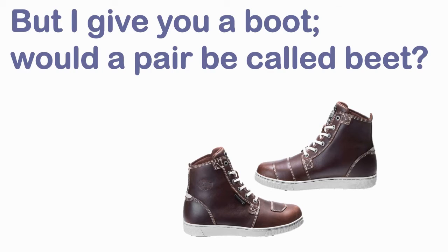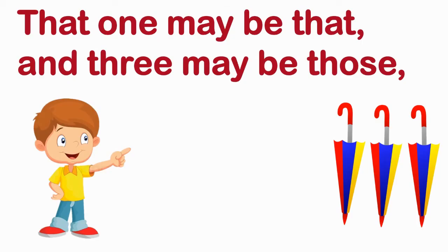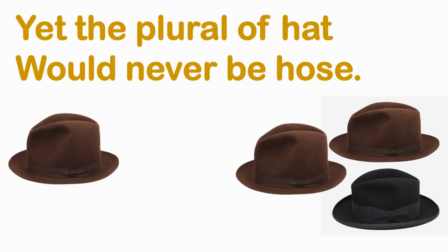That one may be that and three may be those. When you point out something, we say 'that' — for example, 'that is a book,' 'that is a bag.' And if there are many, we call it 'those' — for example, 'those are bags,' 'those are umbrellas.' Yet the plural of hat would never be hoarse. If that is those, then hat should be hoarse — but no, that is wrong. The plural of hat is hats.